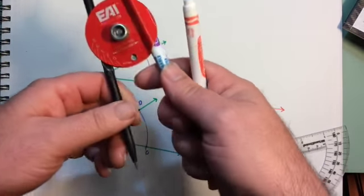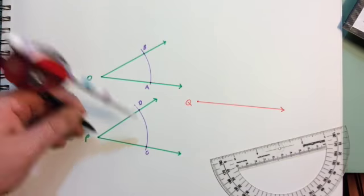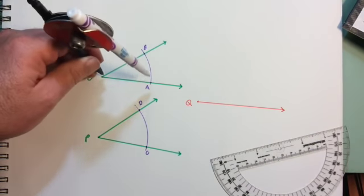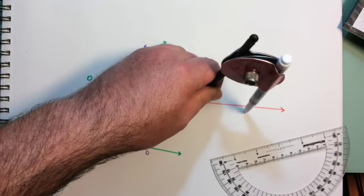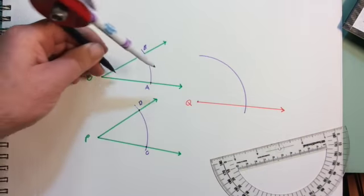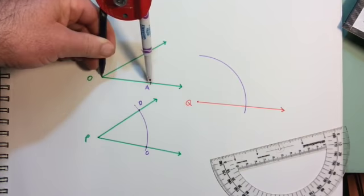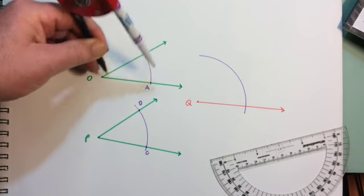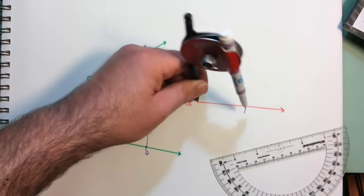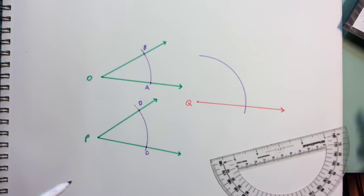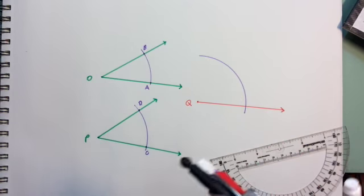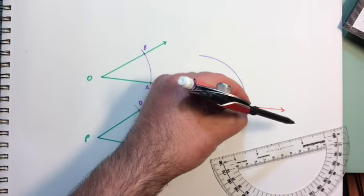Using that same distance—sorry, not from A to B, the same distance from O to A—I'm making an arc on the beginning of that line. And I'm going to label that point E.